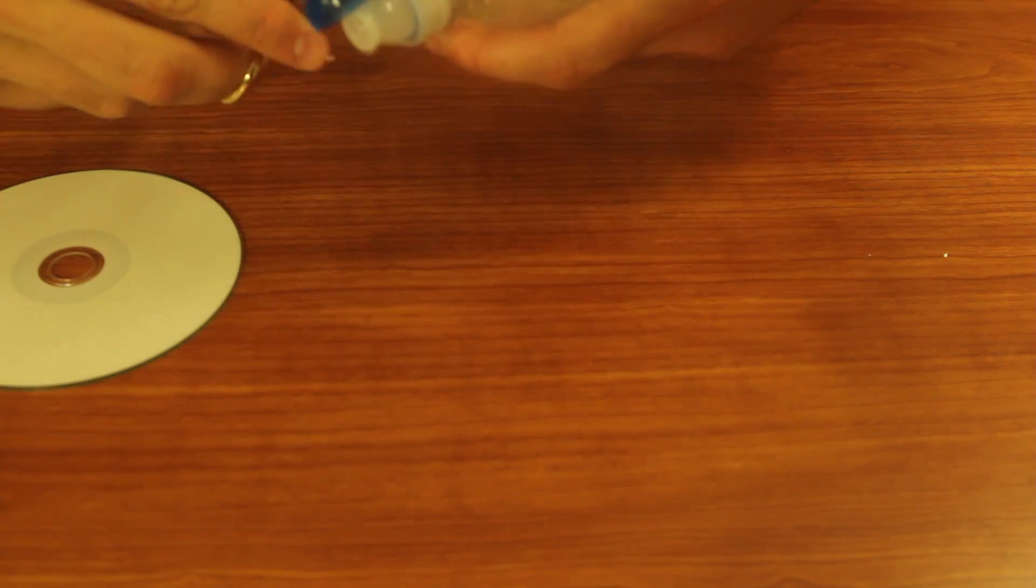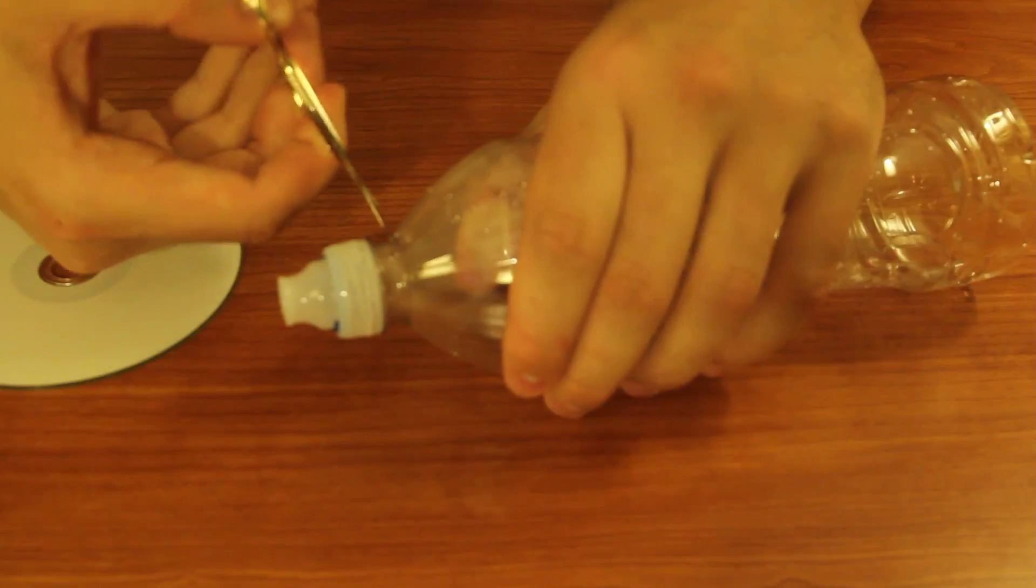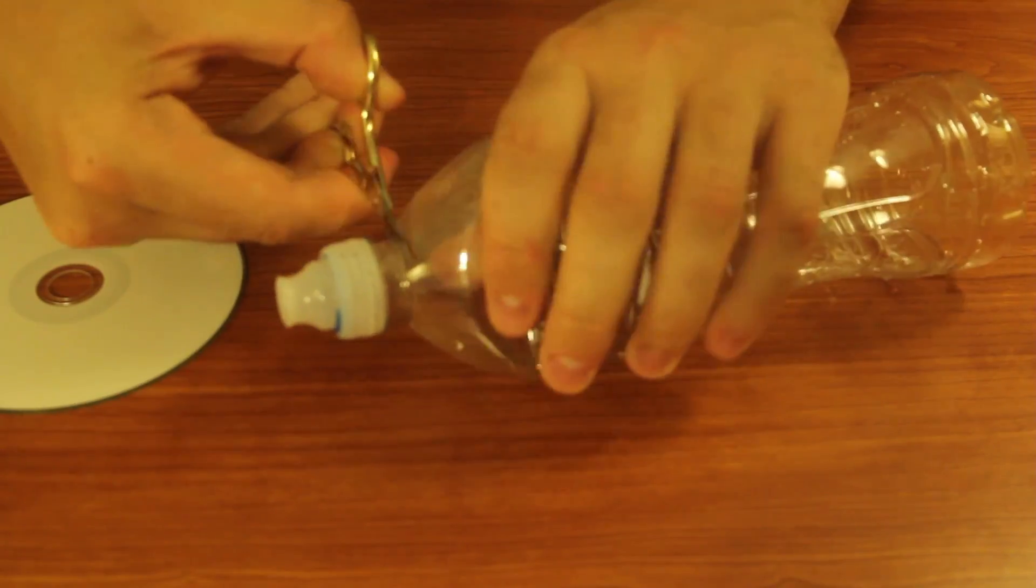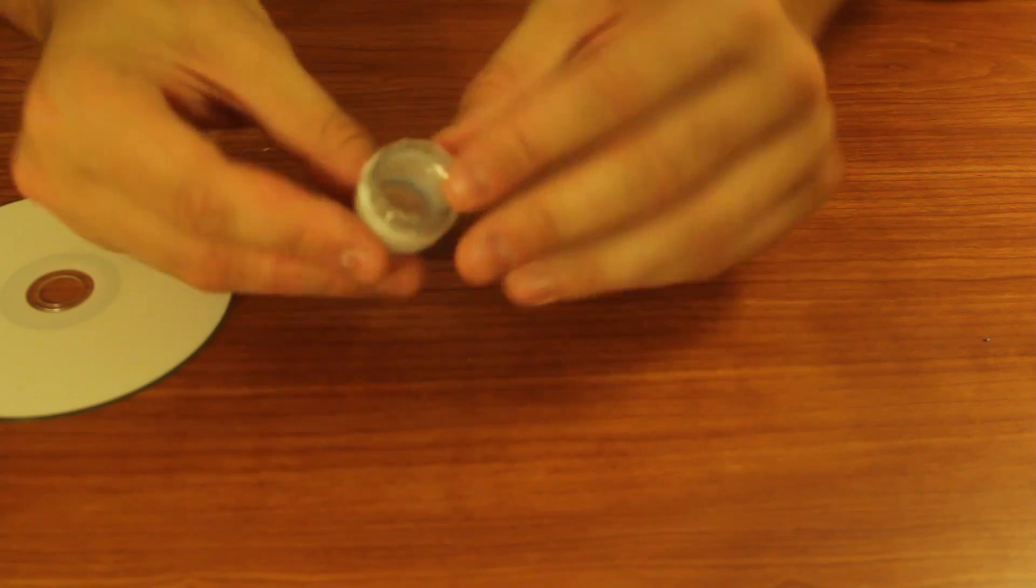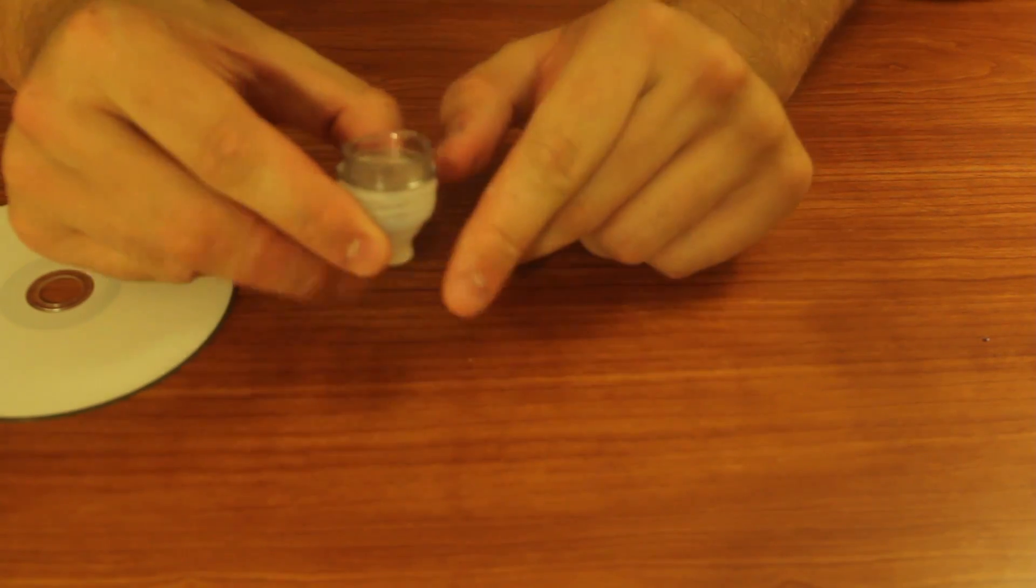First thing we're going to do is cut this bottle, remove the cap, and then we want to just remove the head of the bottle. So it's gonna look something like that. You see it's pretty flat over here.